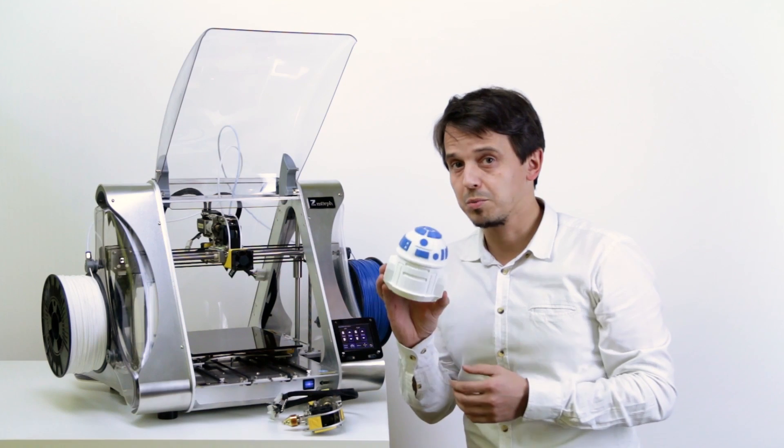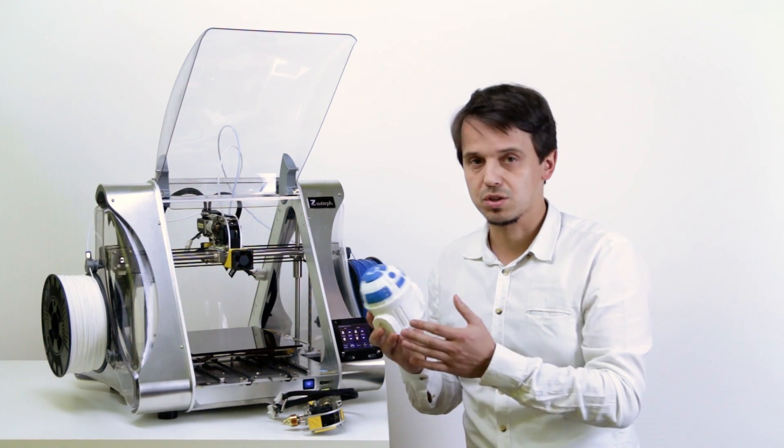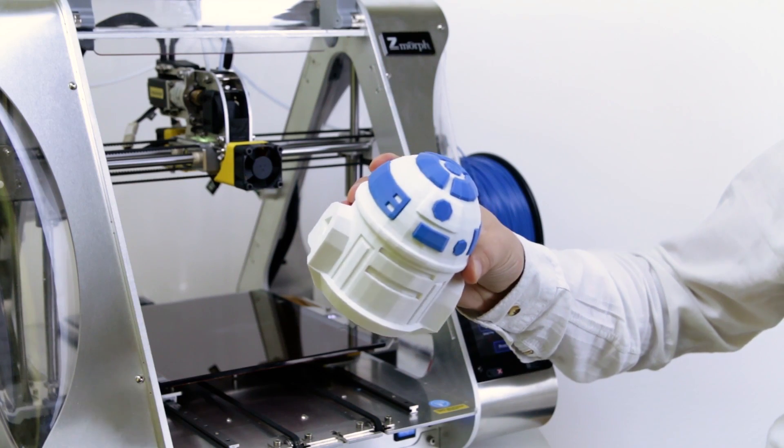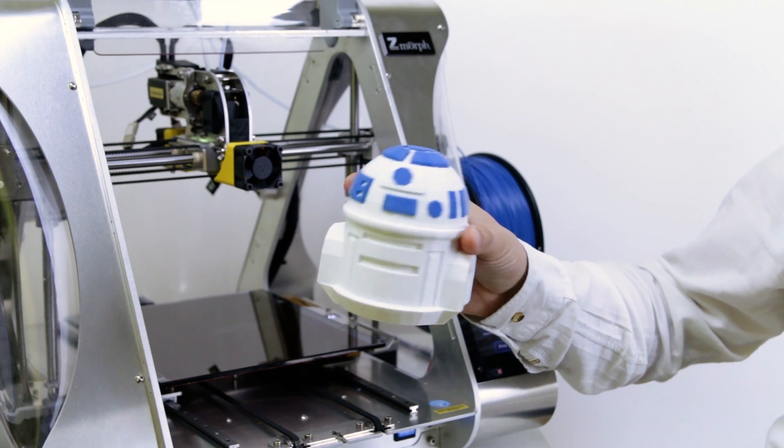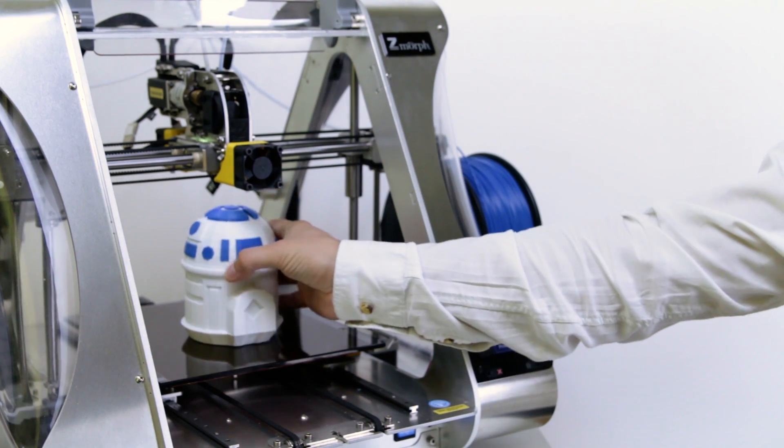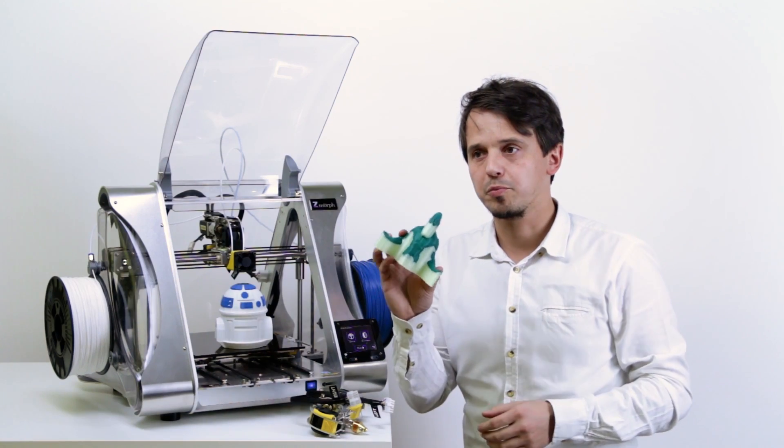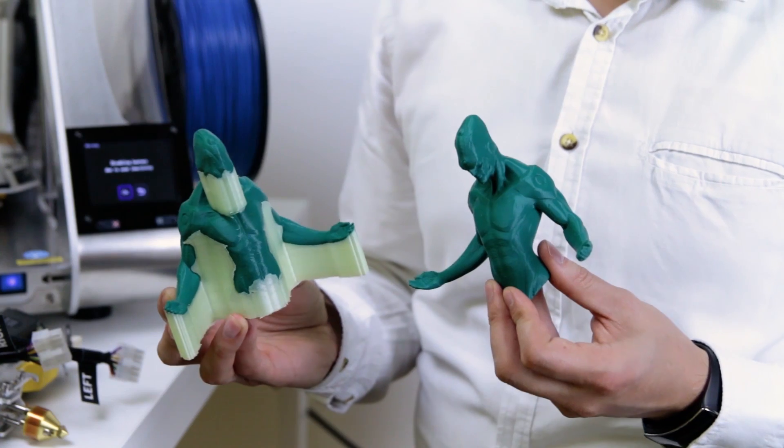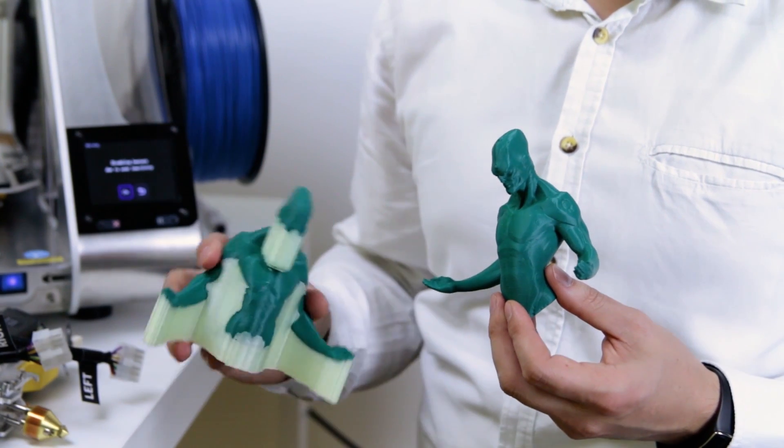First thing we can do is a standard two material print, which is just two different colors printed in various parts of the model. We can also use it for printing water soluble support like the PVA over here.